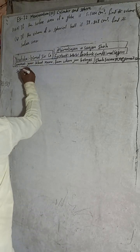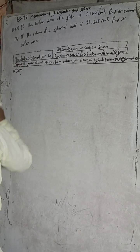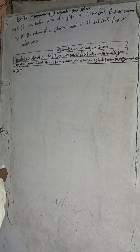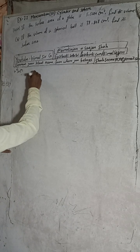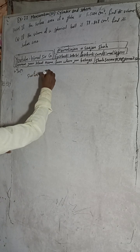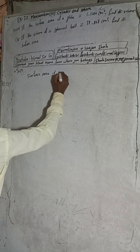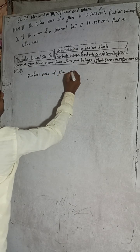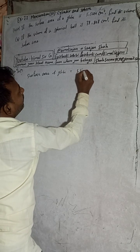I will start the solution now. You can see there are two questions, A and B. I will solve question number 10A here. If the surface area of a globe is 5,544, find its volume. So surface area of globe is equal to 5,544.